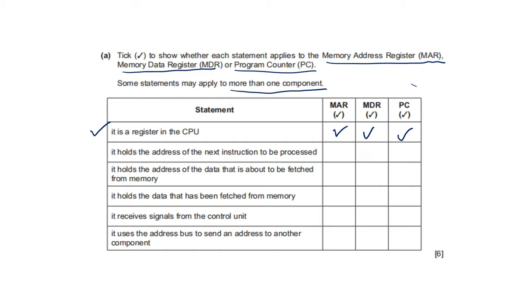Statement two: it holds the address of the next instruction to be processed — that is the PC or program counter. The next statement: it holds the address of the data that is about to be fetched from memory — that is MAR.